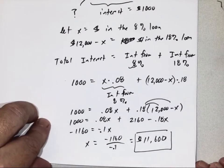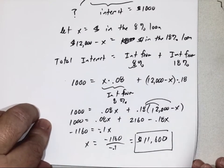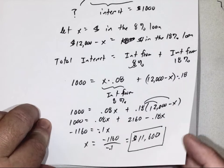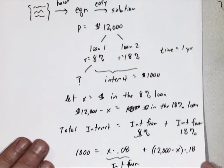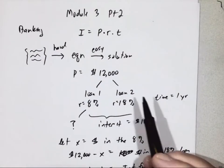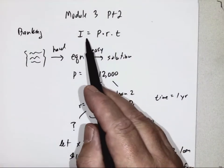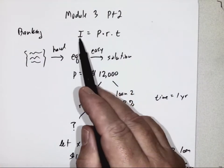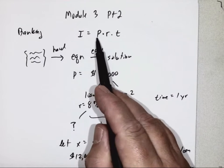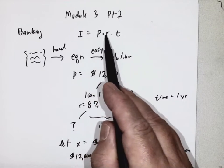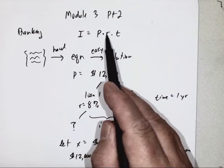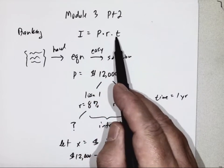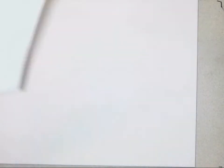That was a banking money problem. The key is it's all based upon this equation: the interest I equals the principal P times the interest rate R times time T.